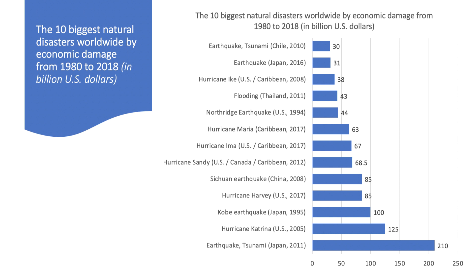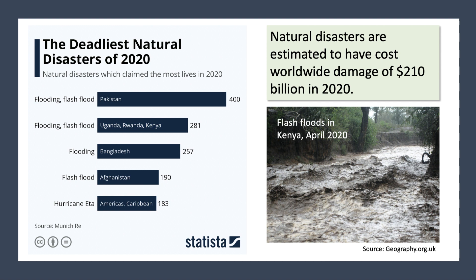The 10 biggest natural disasters from 1980 to 2018 — covering nearly 40 years — show enormous economic costs. The earthquake and tsunami in Japan was the biggest in terms of economic cost, followed by Hurricane Katrina. Globally, over 200 billion dollars of economic damage is caused by natural disasters, but the human and social cost is absolutely staggering. There were natural disasters in 2020 claiming lives, including flash floods in Kenya. Many low-income nations are less able to cope with natural disasters — they are more vulnerable and more exposed to the impacts of climate change, including flood risk.